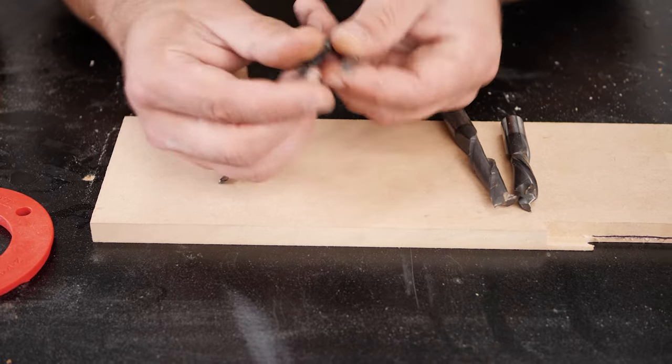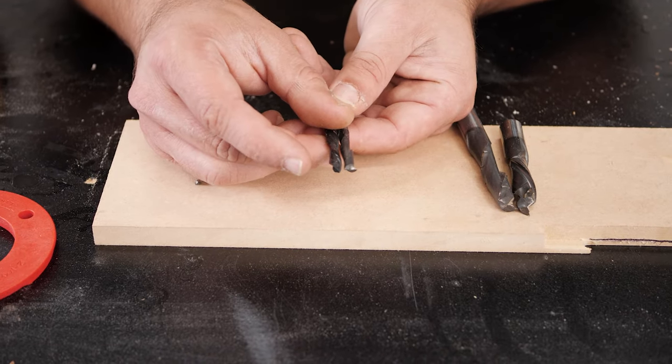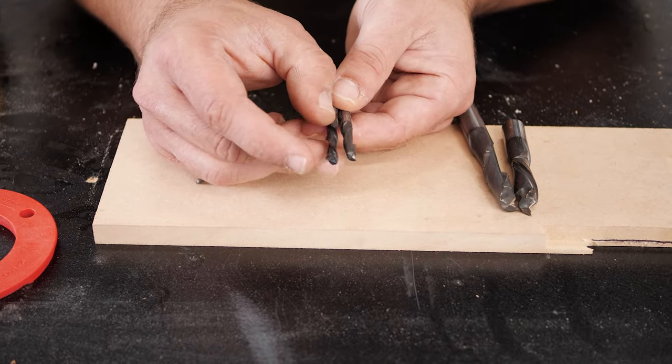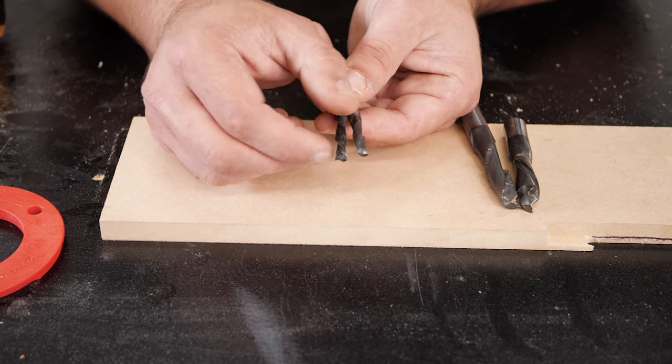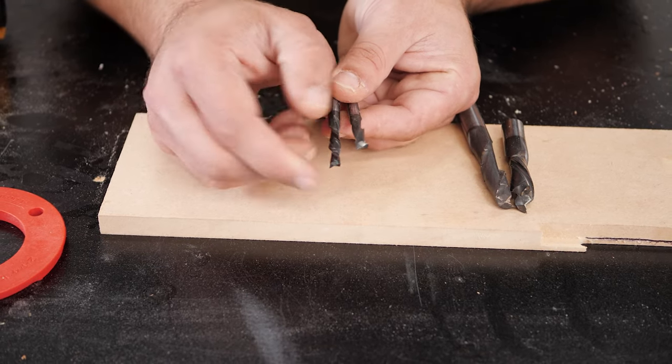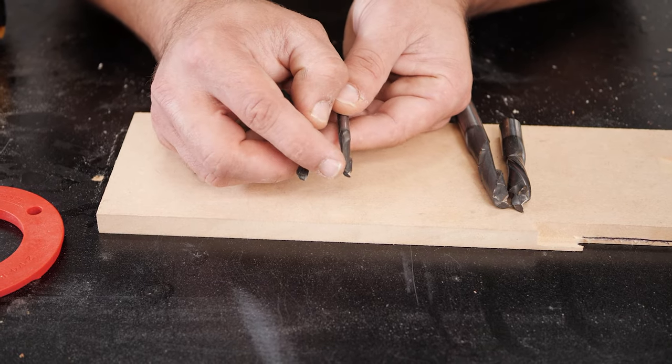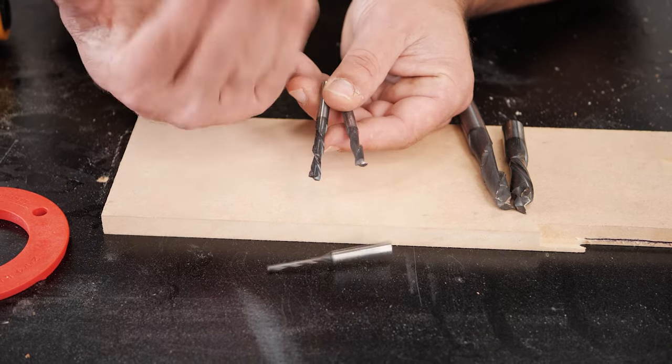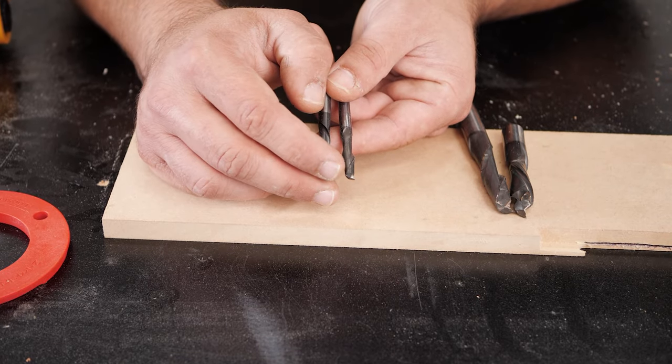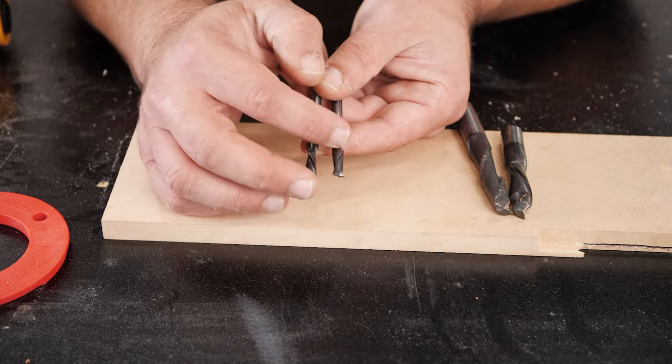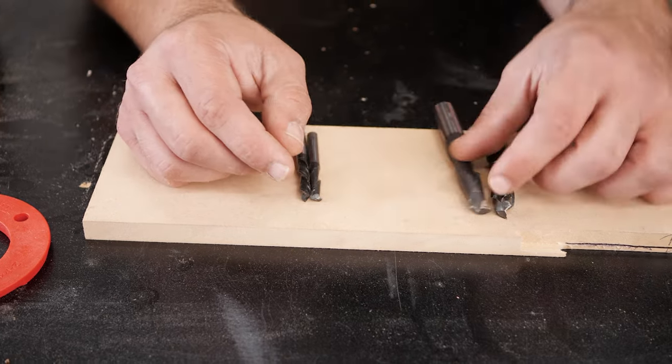Now you can see this is the same size bit, but one cuts up and one cuts down. This is the down cut bit. As you can see, the bit would be spinning this direction and it's going to force chips down and give you a better finish on top. This is an up cut bit, which means it's going to scoop chips up, clearing them out of your cut, keeping your cut cooler. But you may get that fuzz on the top of your cut.